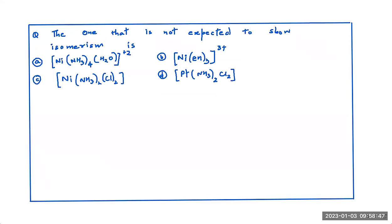Yet another question in front of us. The one that is not expected to show isomerism. Not. Let us convert them, let us write them in their general format. A can be written as M, where M is a metal. A4, A represents the first ligand, B represents the next ligand, raised to plus 2. I'm just converting them into their molecular formula. That's an easier way to solve.